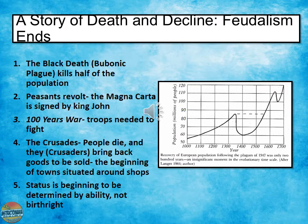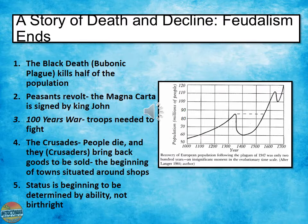If you look at the chart on the right, you can see the decline in the population of Europe and how it slowly recovered. And one of the second causes of the end of feudalism would be the peasants and their revolt. The peasants and the nobles were unhappy with King John and his spending, so they forced him to create the Magna Carta, which we studied last quarter. The Magna Carta limited the king's power, which helped end feudalism.